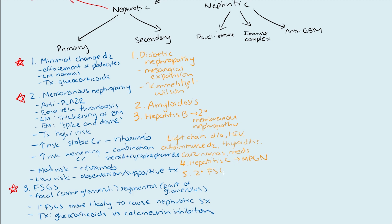You can also have secondary FSGS, a lot of which is due to systemic diseases. NSAIDs are a cause — NSAIDs are really just not great for the kidneys. Bisphosphonates, especially pamidronate, are the most commonly known to cause FSGS. Then heroin, HIV, lupus, diabetes, and obesity. This is also more common in African-American patients. It's thought to be due to chronic hyperfiltration — obese patients have more protein to filter all the time, leading over time to chronic damage to the glomeruli and nephrotic range proteinuria. Treatment is less about immunosuppression and more about treating the underlying disease and reducing glomerular pressures with ACE inhibitors.